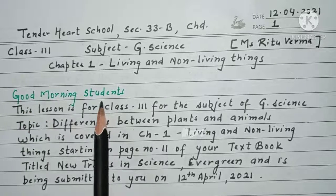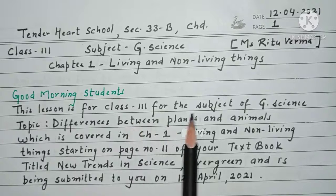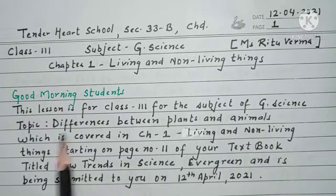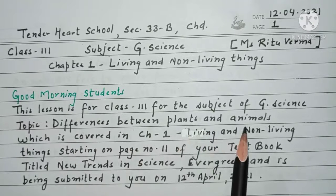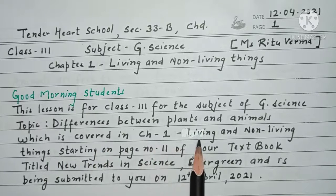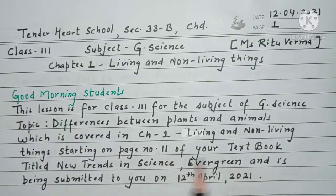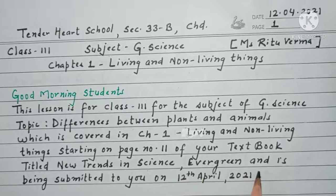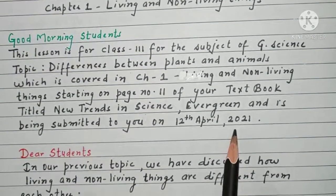Good morning students. This lesson is for class 3 for the subject of general science. Topic: differences between plants and animals, which is covered in chapter 1, living and non-living things, starting on page number 11 of your textbook titled New Trends in Science Evergreen, and is being submitted to you on 12th of April 2021.